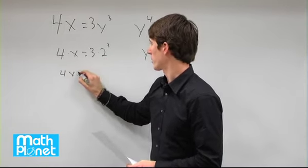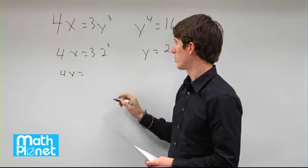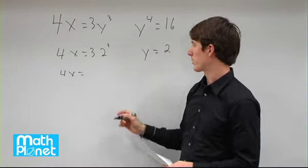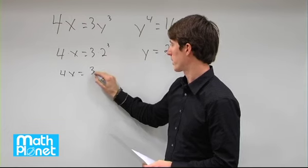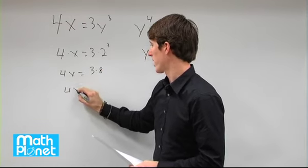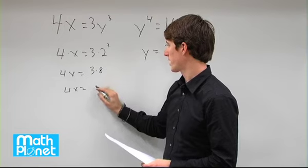So this gives us 4x equals 3 times 2 cubed, 2 times 2 is 4, 4 times 2 is 8, and then so we have 3 times 8. So 4 times x equals 3 times 8 is 24.